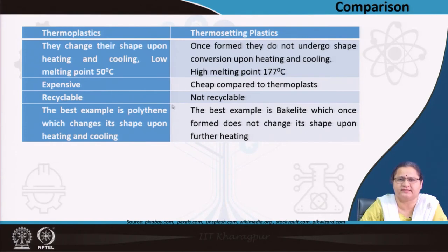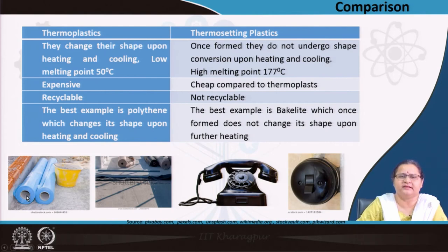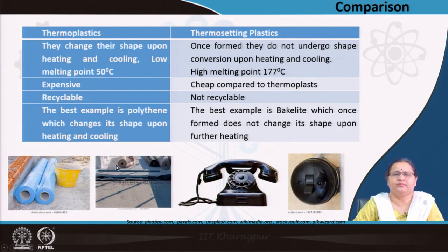Thermoplastics are much more flexible, less rigid, less brittle, and can change shape upon heating and cooling — which is not possible for thermosets. A very popular example of thermosets is bakelite: early-day switches, telephones, and handles of utensils and pressure cookers are all made of bakelite. Polyethylene, a thermoplastic, is used as a damp-proofing membrane for roofing — a flexible membrane that a thermoset would not provide.